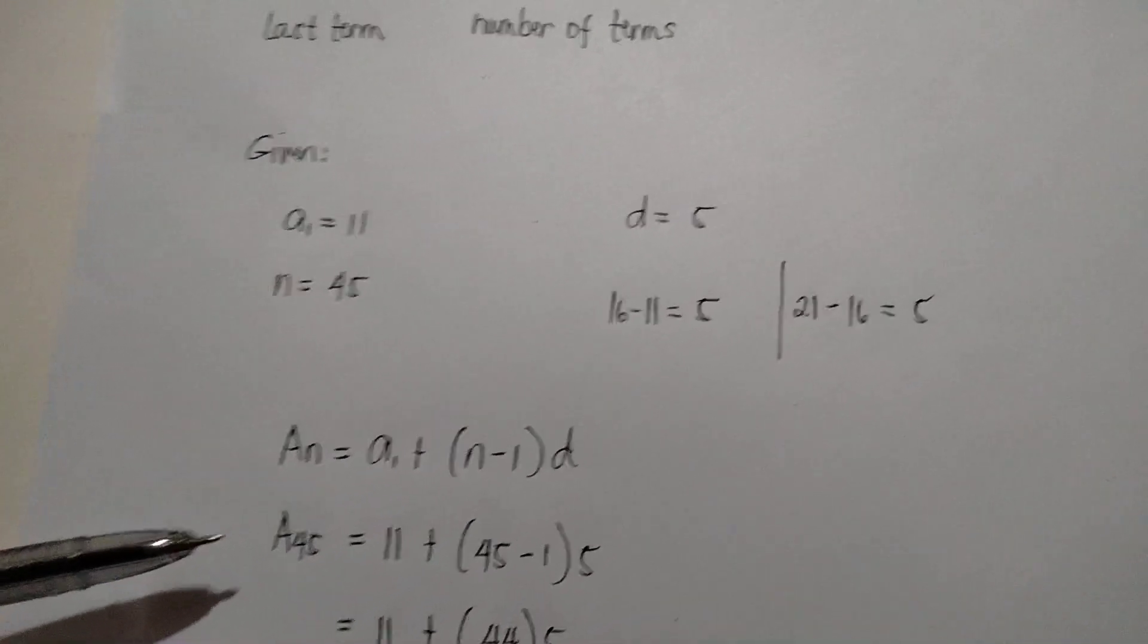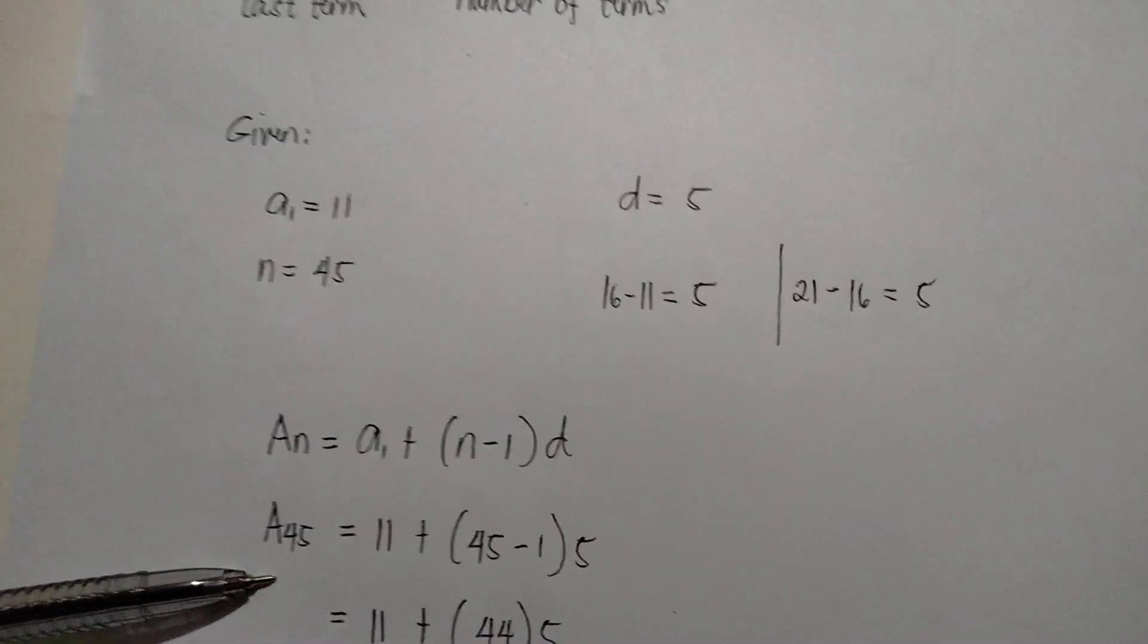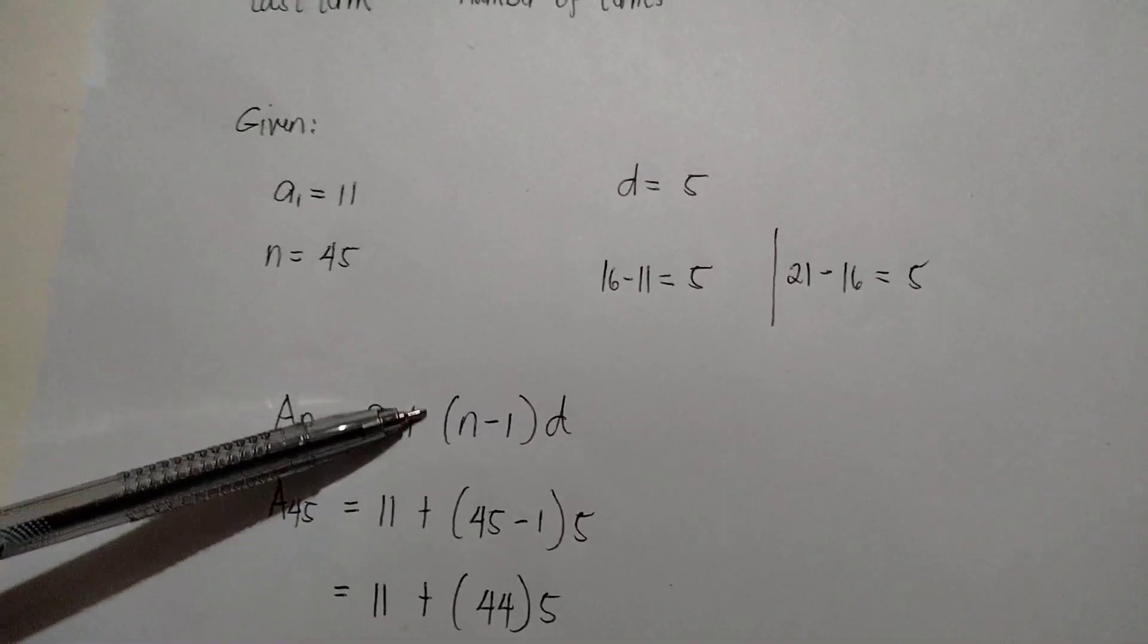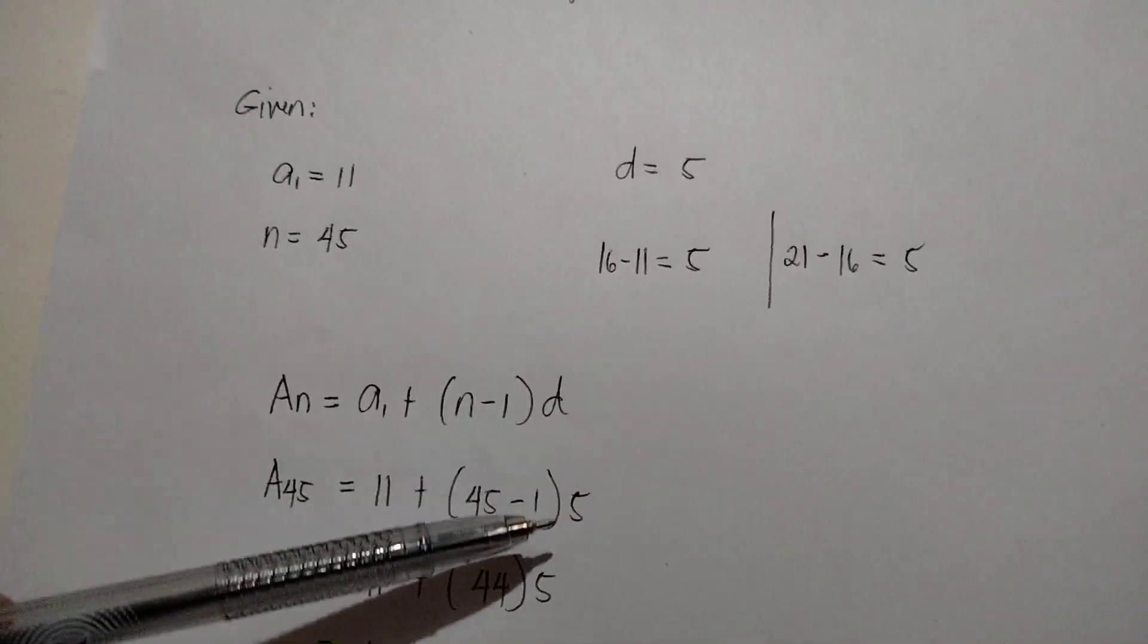So, that becomes a sub 45 since we are asked to find the 45th term. a sub 1 is 11, n is 45, and d is 5.